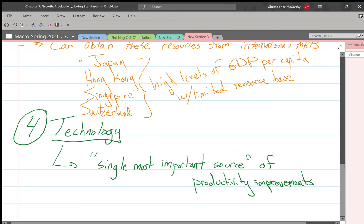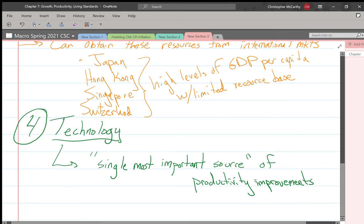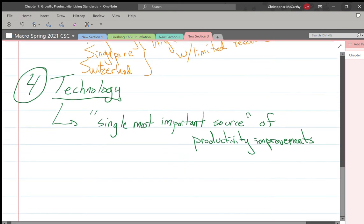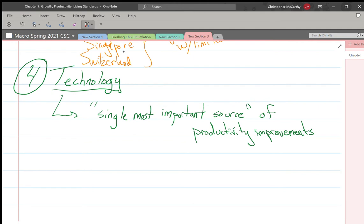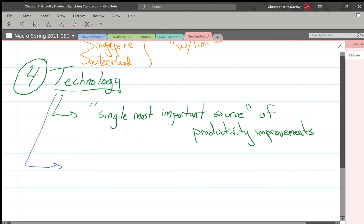Technology is widely accepted as the single most important source of economic growth, which is why up to 200 years ago we really didn't see a lot of increase in GDP per capita or productivity. Technological change is not just in whatever industry it revolutionizes.